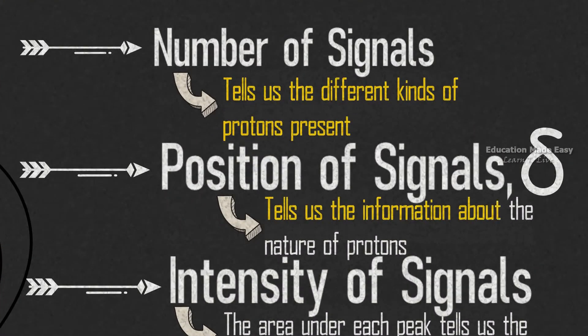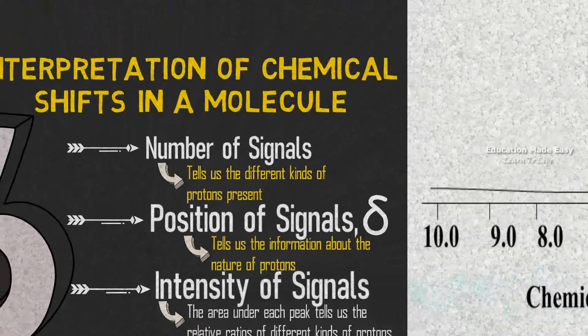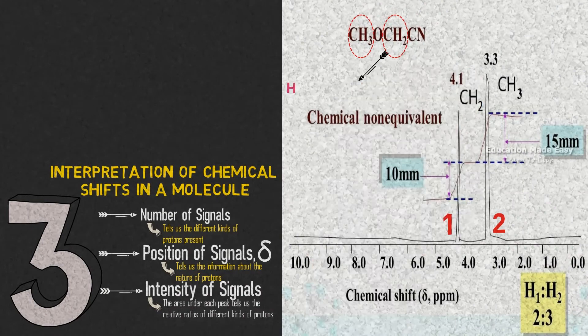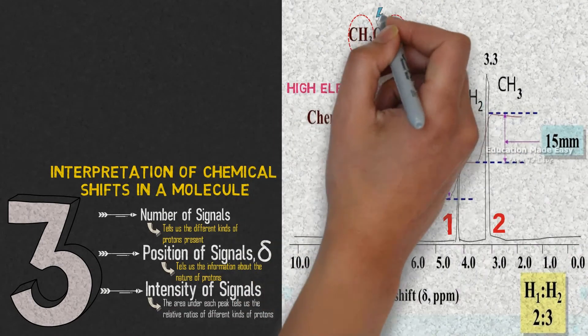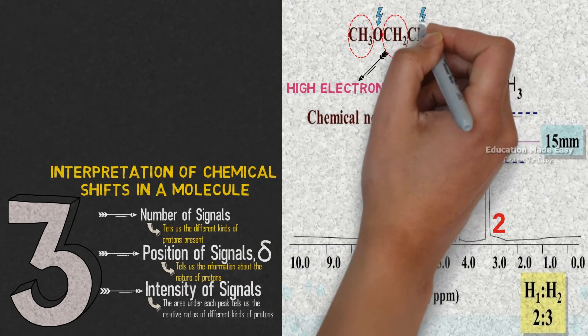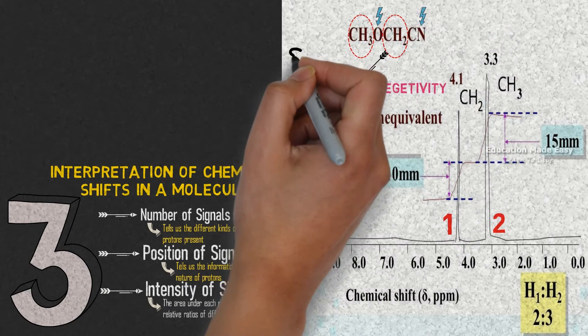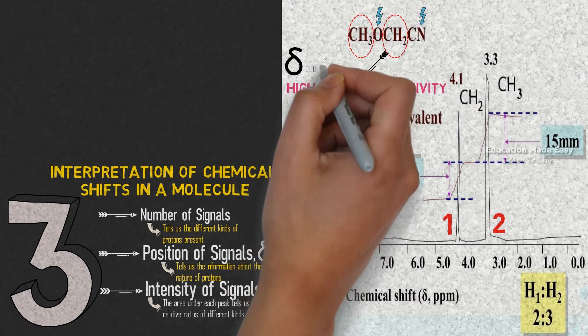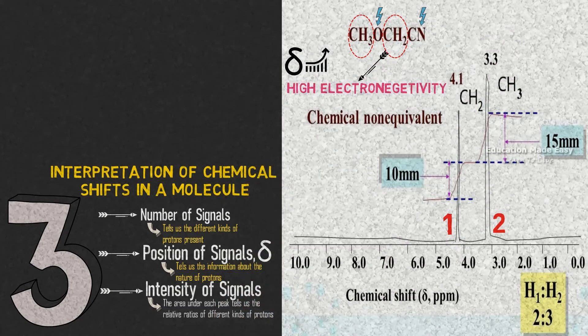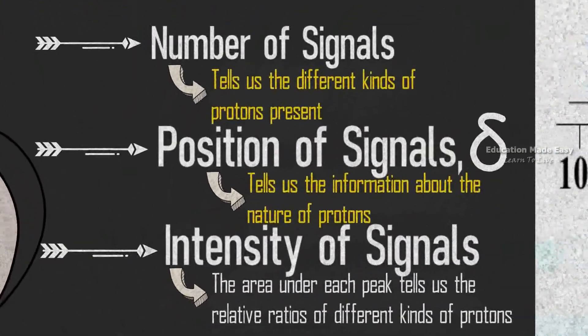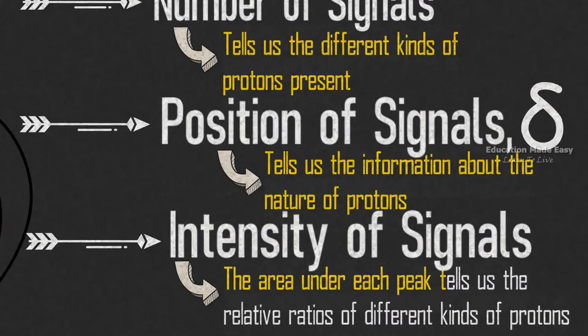Now the position of signals tells us the information about the nature of protons. Here the CH2 is affected by high electronegativity of oxygen and nitrogen, causing the chemical shift value to increase compared to the CH3. The intensity of peak gives the relative ratios of different kinds of protons.